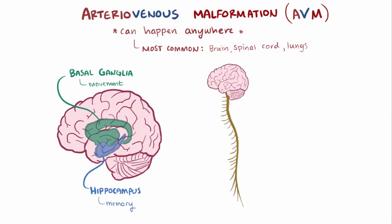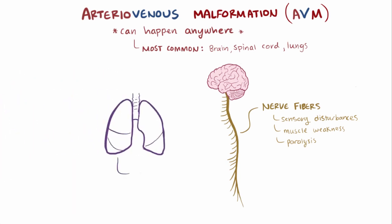In the spinal cord, AVMs can, by the same mechanisms, damage nerve fibers, which can cause sensory disturbances, muscle weakness, or even paralysis in the parts of the body controlled by the affected nerves. In the lungs, an AVM might result in shortness of breath or coughing up blood.